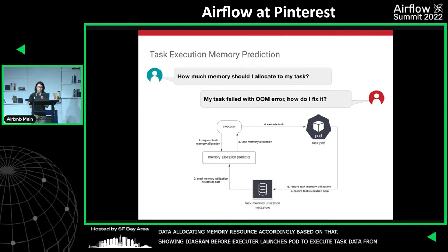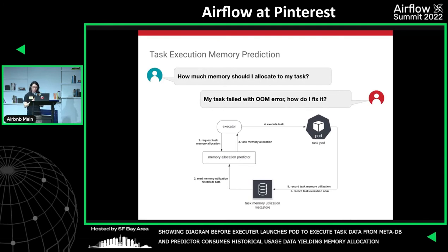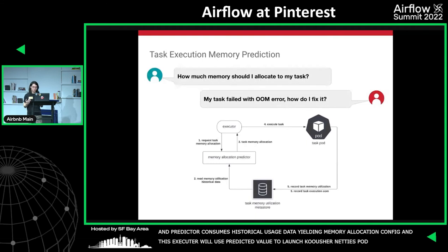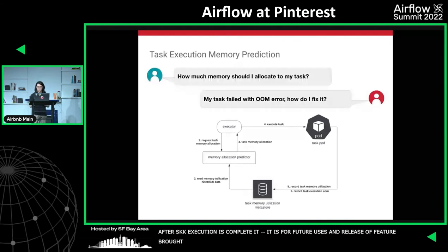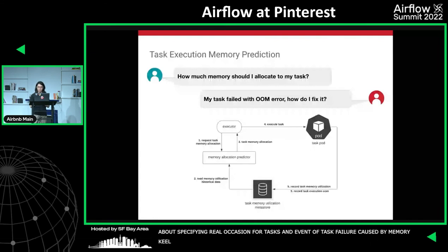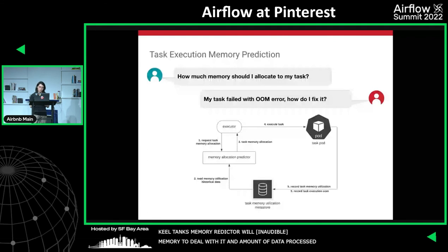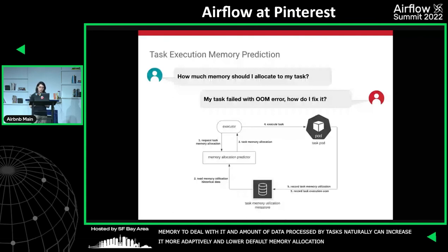To improve this, we introduced a feature to let the workflow system predict memory consumption based on historical memory usage data. Right before the executor launches a pod, it queries historical memory usage from the meta DB, and a memory allocation predictor yields a memory allocation config. After task execution, it records memory usage and whether it failed with OOM kill. This freed users from specifying memory allocations, and in OOM failure retries the predictor automatically bumps memory. We achieved up to 30% memory resource savings.